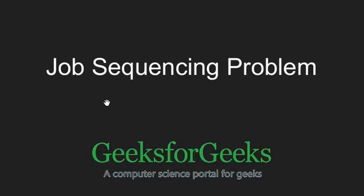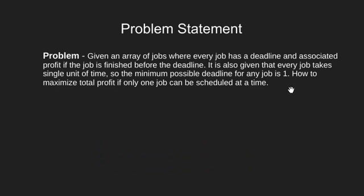Hello friends and welcome to GeeksforGeeks. In this video we will be solving the job sequencing problem. The problem statement is that there are a certain number of jobs, each with a deadline and some profit if it is done before its deadline. Each job takes only a single unit of time, and we have to schedule these jobs so as to maximize the total profit.